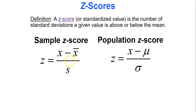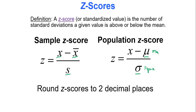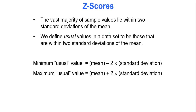A z-score, or standardized value, is the number of standard deviations a given value is above or below the mean. So if you have a z-score of two, it means your data value is two standard deviations above the mean. The formula to calculate the sample z-score is: take your data value, subtract the mean, and divide by the standard deviation — where the mean is x-bar and standard deviation is s. For a population, the mean is mu and standard deviation is sigma (Greek letters). Round your z-scores to two decimal places, or as instructed.